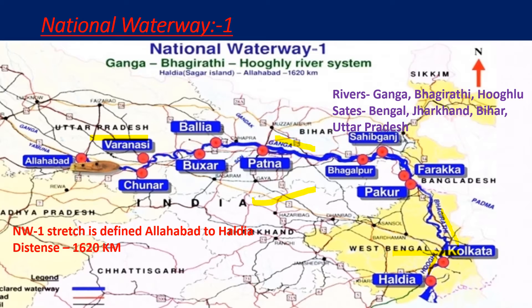National Waterway One stretches from Allahabad to Haldia in West Bengal. Allahabad is in Uttar Pradesh. The total distance is 1620 kilometers. This is important for exams — they will mainly ask which river National Waterway One is located on, and the answer is the Ganga river.